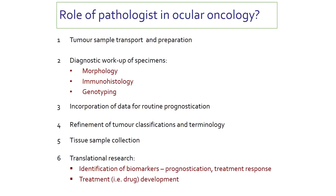The role of a pathologist in ocular oncology includes tumor sample transportation and preparation, diagnostic workup of the specimen, morphological features, immunohistology, genotyping, incorporation of data for routine prognostication, refinement of tumor classification and terminology, tissue sample collection for translational research, identification of biomarkers, prognostication, and assessment of treatment response and treatment profile.